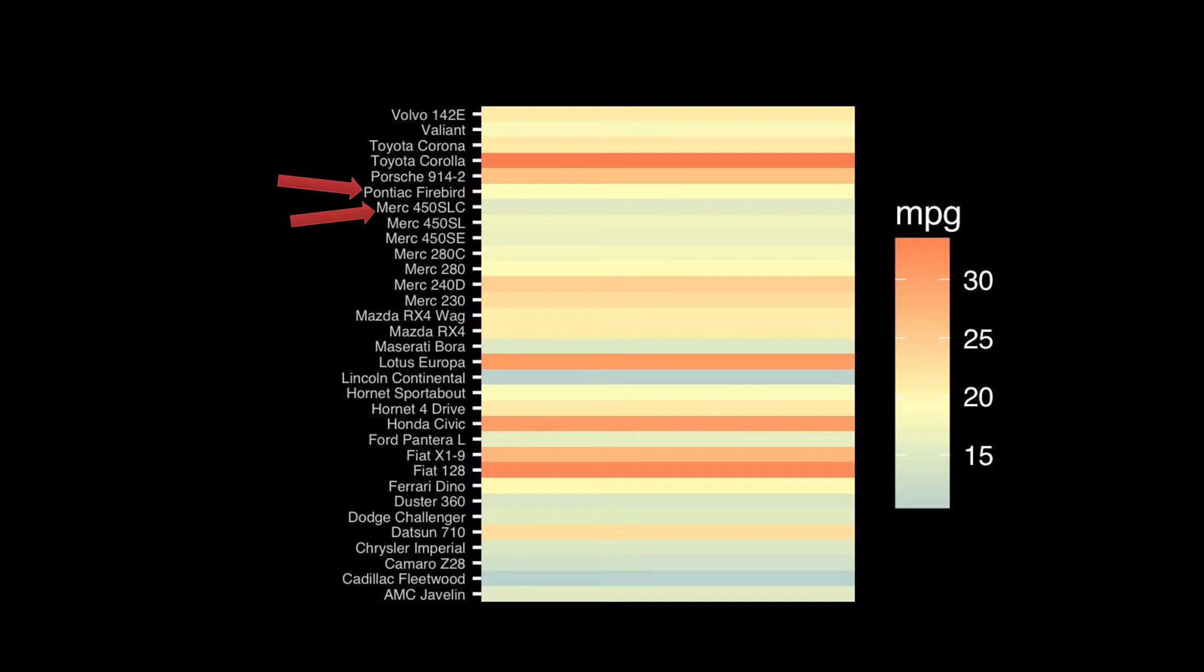Here we have miles per gallon and I can see that these two cars—a Pontiac Firebird, a muscle car that I only saw as a matchbox model with a big eagle on the bonnet—it's more fuel efficient surprisingly than this Mercedes, a more sensible German car. We can see that because they're right beside each other and their colors are different.